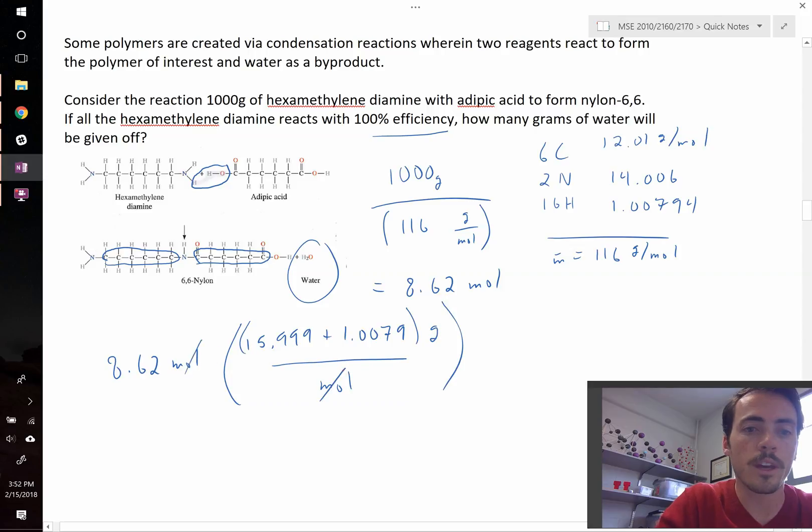Our moles cancel and we're left with mass, which when we plug it in is just equal to 155.29 grams of water. That's how much water is created from this reaction.